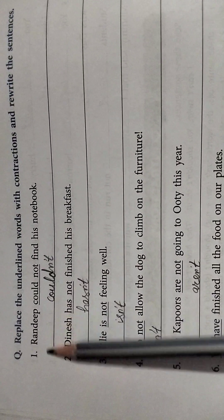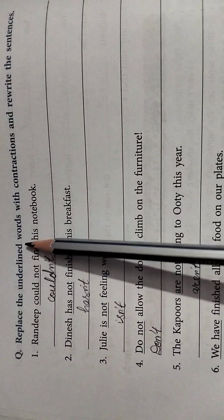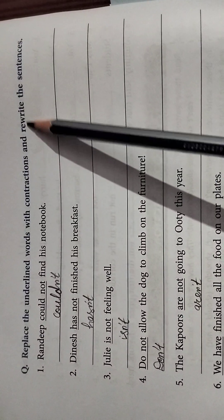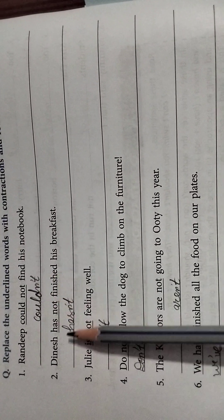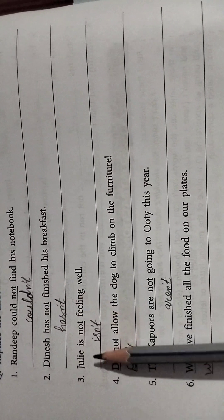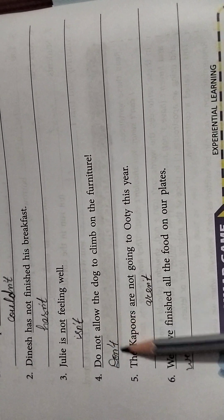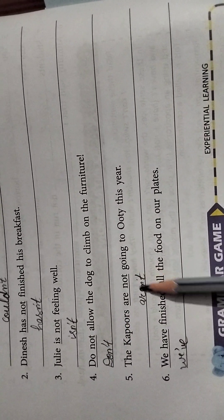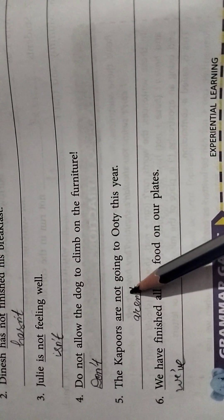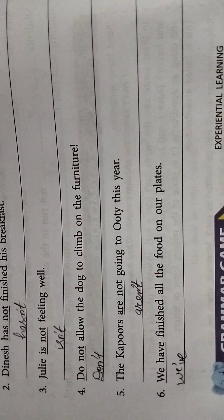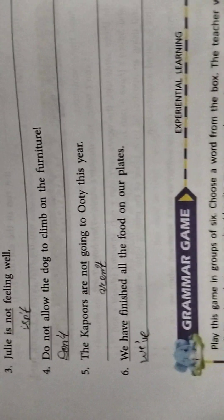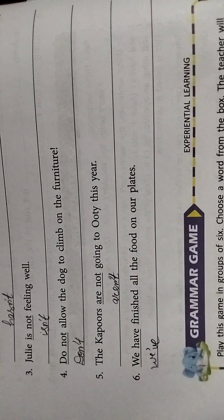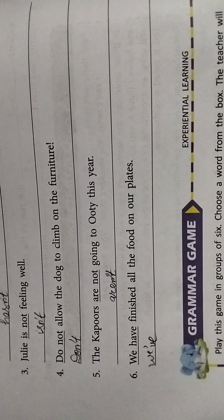In the last exercise of this chapter, replace the underlined verb with contractions and rewrite the sentences. Could not — couldn't; has not — hasn't; is not — isn't; do not — don't; are not — aren't. Note that the apostrophe will be used after N. I hope students, the 4th chapter exercises are now clear for you. Thank you, bye bye.